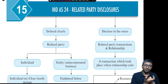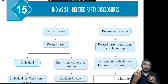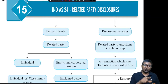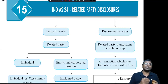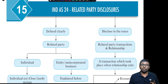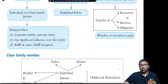Joint control arises because of an agreement between the parties. If an individual has joint control, that is the first point. Second, if the individual and the group together have significant influence over the entity, then that individual is also related. Third, an individual who is a key managerial person of the entity, and also the key managerial person of the parent entity, is also a related party.